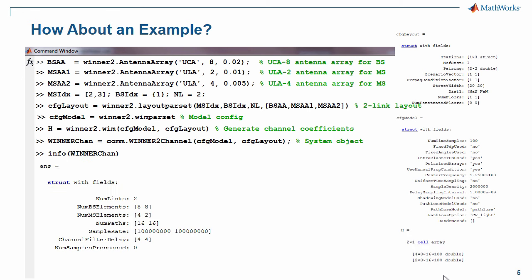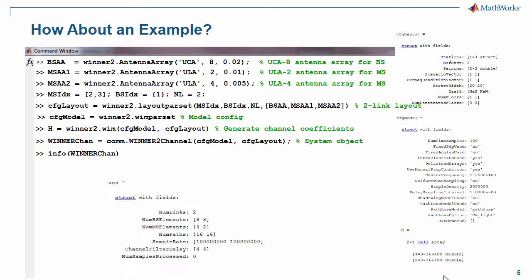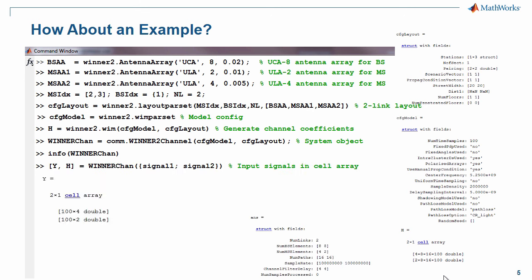This code shows how to create a winner system object. You can use the info method of the object to learn important derived properties of the channel. This code shows how to actually filter the signal with the object. The output signals are cell arrays where each element of the cell is a 2D matrix that accounts for the number of time samples and the number of receive antennas.